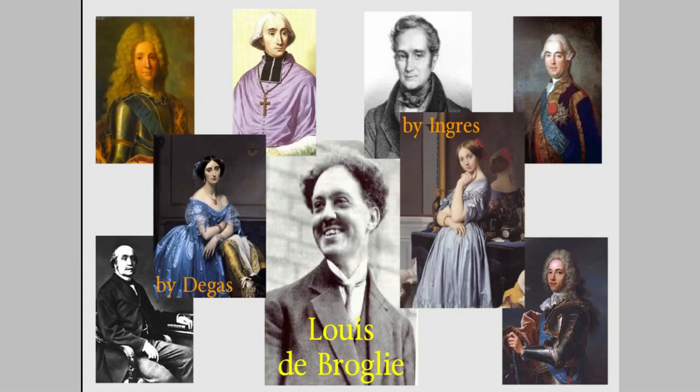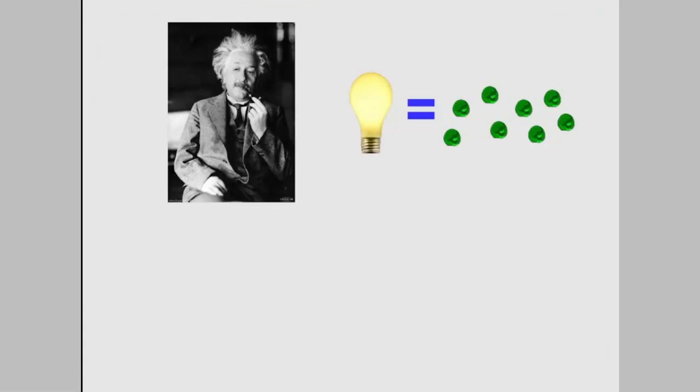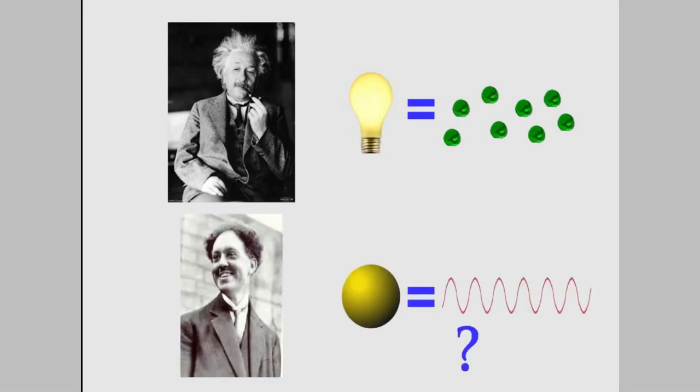So what did Louis de Broglie discover? He was interested in Einstein's idea that light, which we usually think of as a wave, can act as though it's made of particles. De Broglie wondered, in that case, do things that we usually think of as being particles